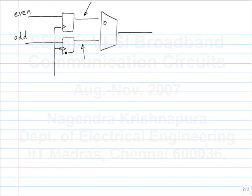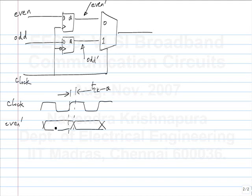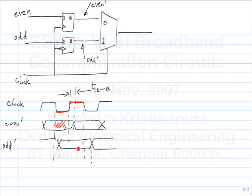Similarly, the odd data changes a little after the positive edge, and we let it out during the positive phase of the clock. So if we call these even prime and odd prime: during the negative phase the even prime data is stable, so we select it; during the positive phase the odd prime data is stable, so we select it. The clock-to-Q delay actually helps here by stabilizing the data before it is routed to the output.